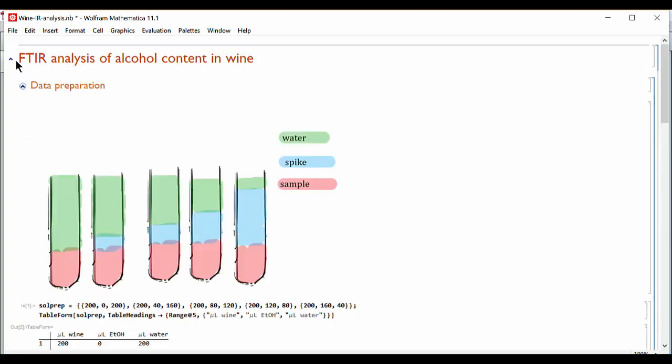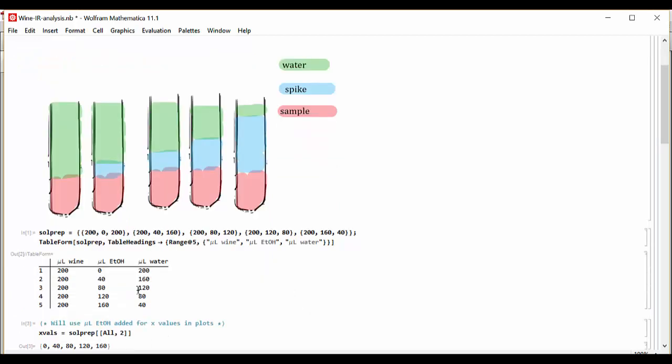So the method that we use is the method of standard addition using a constant volume of the analyte. Start off with 5 samples, each one having say 200 microliters of wine in each one of the sample compartments, and then we add known concentrations of ethanol to our samples.